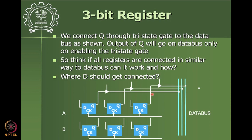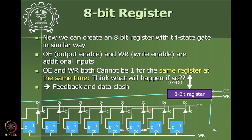The D lines can be directly connected to the data bus because there's no conflict. The data bus may have continuously changing data, but that won't disturb this register unless the clock goes high — the D value cannot be stored into the register without the clock pulse. This same principle can be extended to create an eight-bit register: put eight D flip-flops together, all clock inputs connected to the WR pin, all tri-state gate inputs connected to output enable, D pins connected to the data bus, and Q connected through the tri-state gate to the data bus.